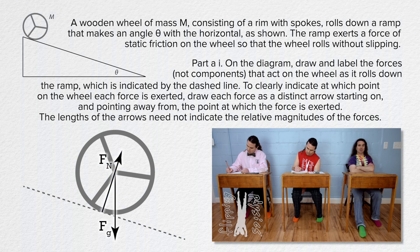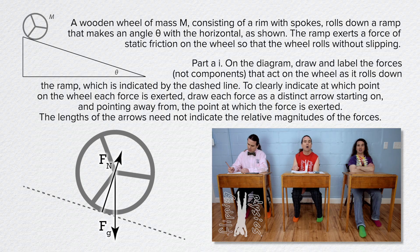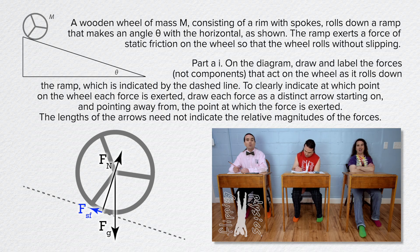The problem states there is a force of static friction on the wheel, so the wheel is rolling without slipping. The direction of the static friction force must be parallel to the ramp — either up or down the incline. If there were no friction, the wheel would slide down, so static friction opposes that motion, meaning it is parallel to and up the incline, acting at the same location as the normal force — the point of contact between the wheel and the ramp.